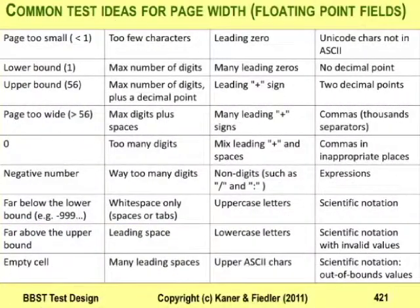Let me illustrate the variety of secondary dimensions with a list that Hong-Win and I use for floating point data entry fields. Notice that this list only considers generic floating point fields — we aren't considering how the program uses the field. If we knew the field was a page width field, we'd add tests to consider how changing the page width changes other things, like distortion of text on the slide, memory leaks, and other memory corruption. But even with just the generic values, we've got an incomplete but useful set of secondary dimensions.